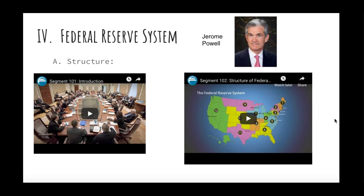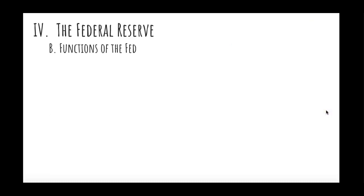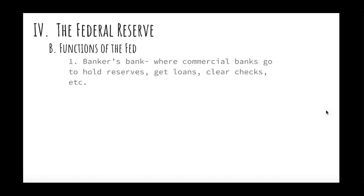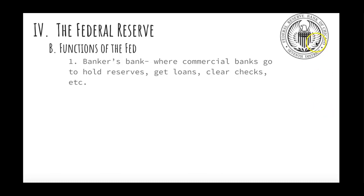Let's talk about the functions of the Fed — what does it actually do? The Federal Reserve acts as a 'bankers bank': it serves as the bank for commercial banks. Commercial banks go there to put their reserves, get loans, and clear checks. For example, when you write a check to a friend who deposits it at their bank, the Federal Reserve is the one actually moving the money around.